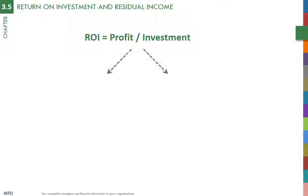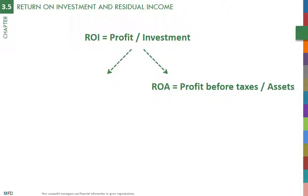Managers focus on two main measures of Return on Investment, ROI. The first ratio, called Return on Assets, ROA, is profit before interest expense divided by total assets. It indicates whether a company provides a good return on its assets.